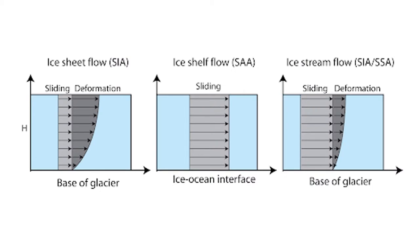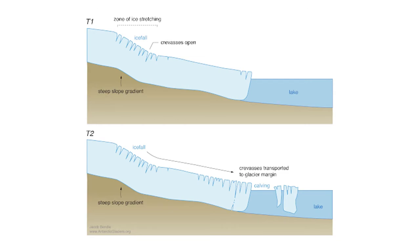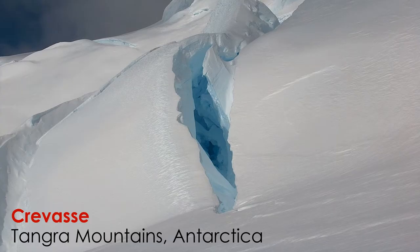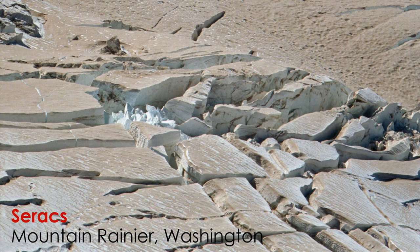Different layers of snow and ice in the glacier move at different speeds. Generally, the bottom of the glacier moves slower than the ice at the top. This movement and flow can cause the glacier to become deformed under its own weight. Glacial ice is brittle and can snap under the right conditions. Deformation creates deep cracks and fractures called crevasses. Where several crevasses intersect on a glacier, you will find a serac — a block or column of glacial ice.